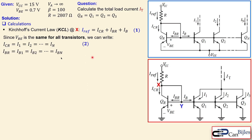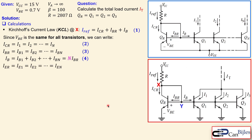We can also say the base currents are exactly the same, because they are related to the collector current by beta. That is equation number three. Since IB is the summation of all N base currents, IB equals N times IBR — the base current of the reference transistor. That is equation number four. Similarly, the emitter currents are also equal for all transistors, since base and collector together make the emitter. That is equation number five.